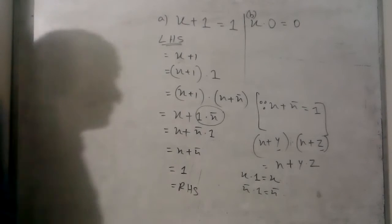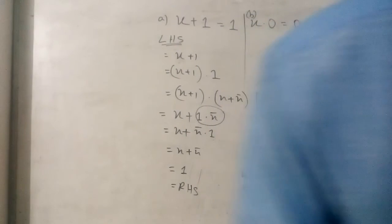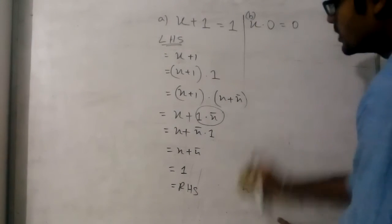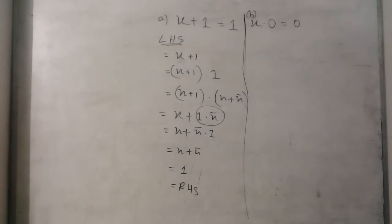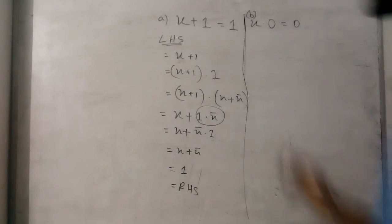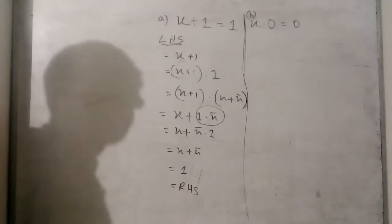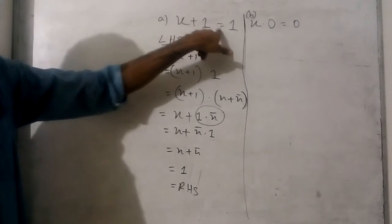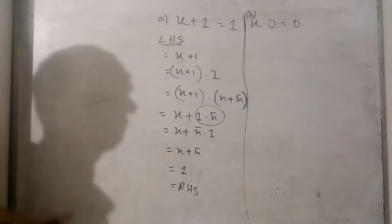So this is our RHS — we have proved the equation by using our postulates. Now, by using the principle of duality, how can we solve this second equation? We can easily solve it, as this is another equation that we will solve by using the rules of duality.